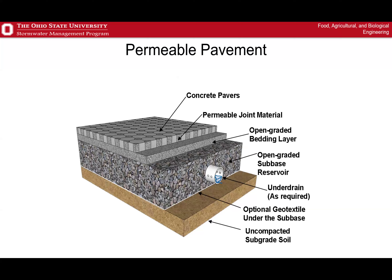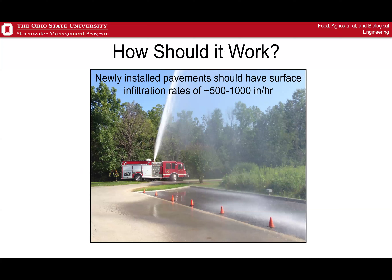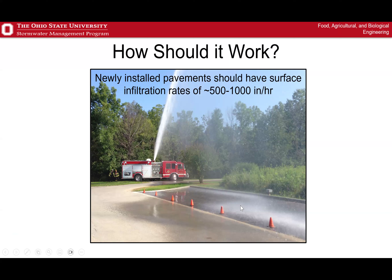Here's a diagram of concrete pavers — you could substitute porous concrete or asphalt. You have your porous material on top and your sub-grading with an underdrain. That's the typical design you'll find for these BMPs. How should this work? Newly installed pavements should have an infiltration rate of 500 to 1,000 inches per hour. As you can see in this picture, a fire truck spraying a full open hose onto porous pavement has it just soaking right in — that's how they should work if installed correctly.